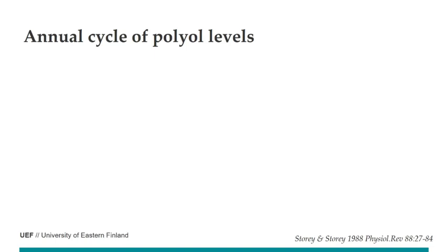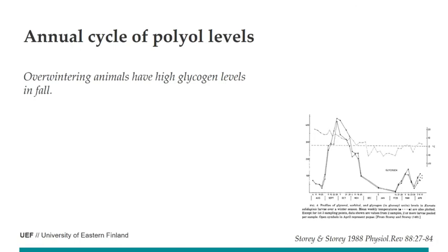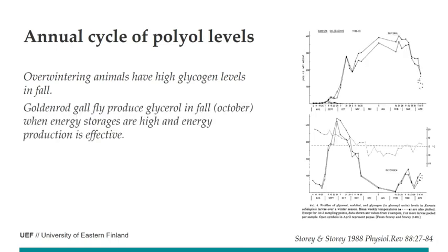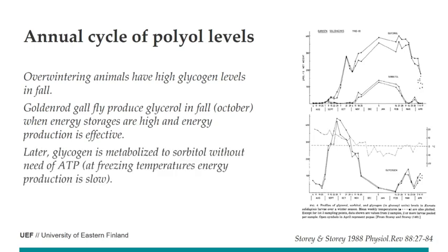A classic old experiment shows annual cycles: overwintering animals have high glycogen levels in fall, and the golden rod gallfly begins producing glycerol in October when energy production is effective. Then through November and into February it relies on sorbitol, which can be produced without ATP — important since energy production is very slow at freezing temperatures.